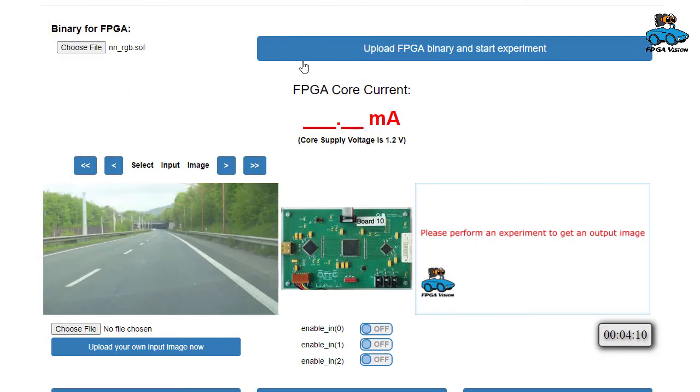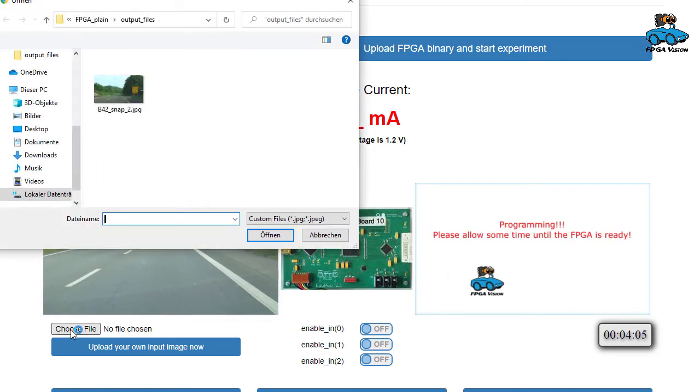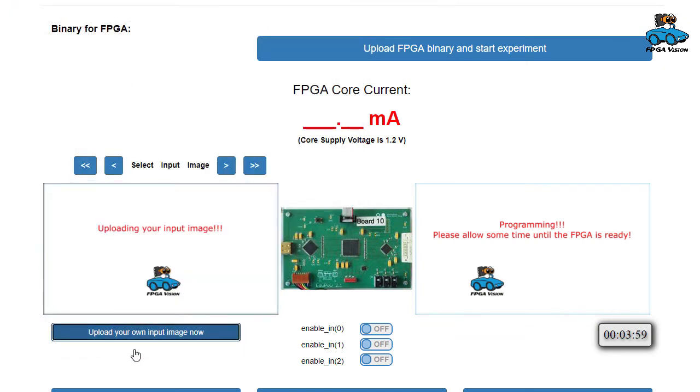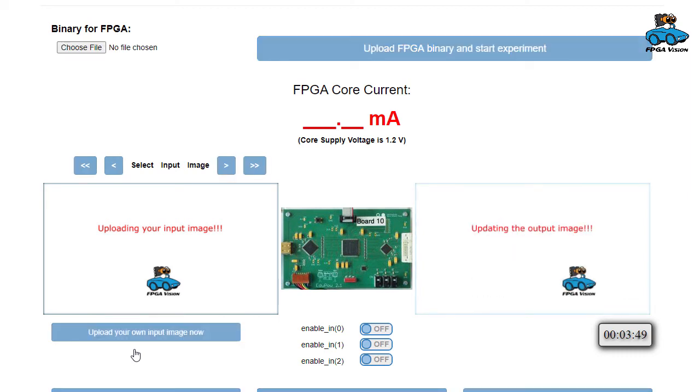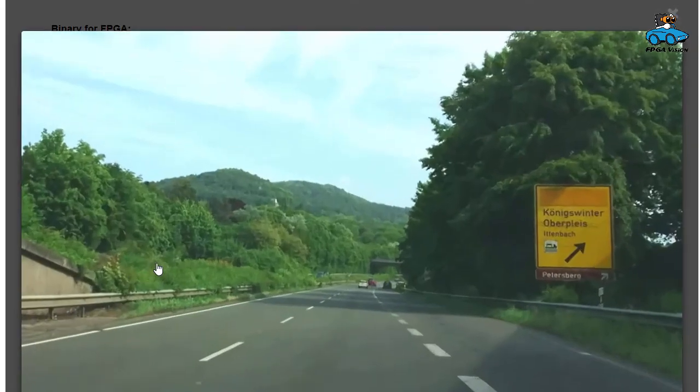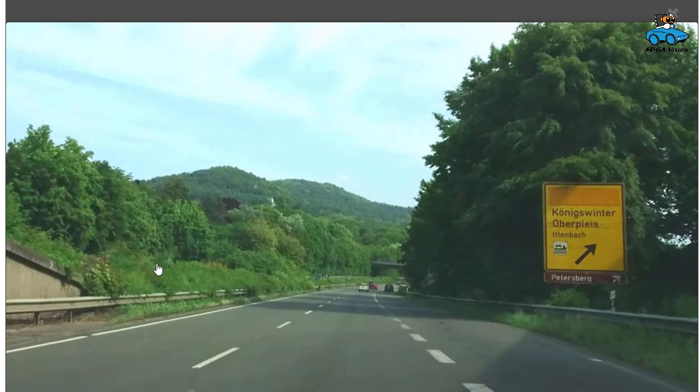We provide a remote lab so that you can verify the result of the synthesis. You upload the binary for the FPGA. We choose a test image from the video of the highway. Then the FPGA is programmed with the binary file. You will see the output of the FPGA operation.